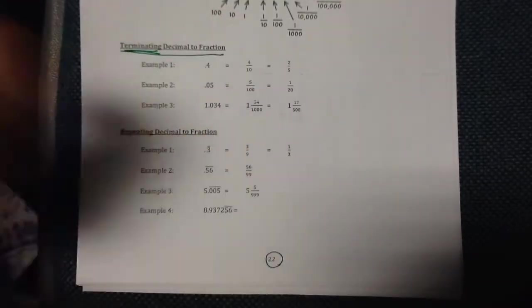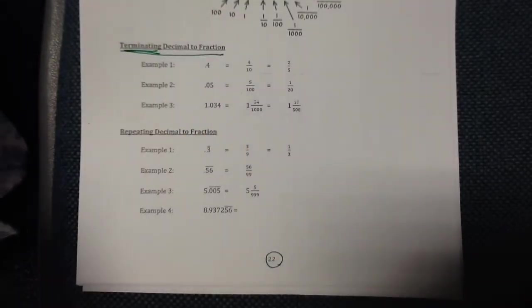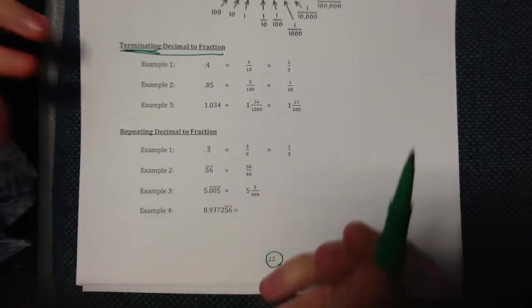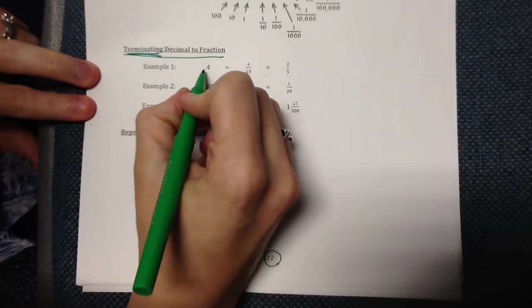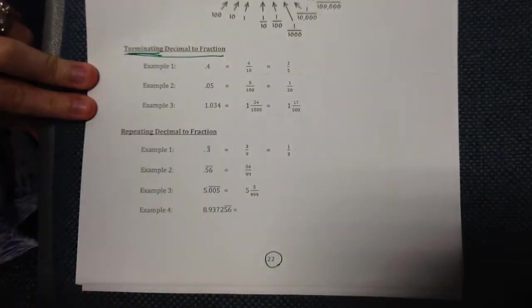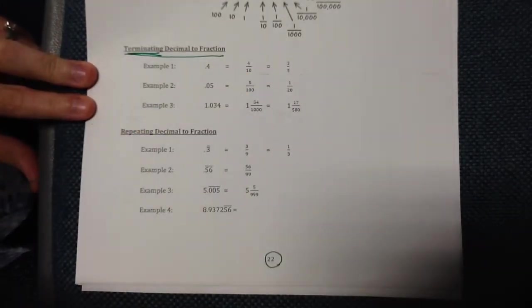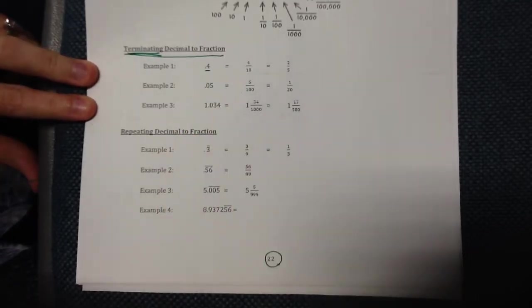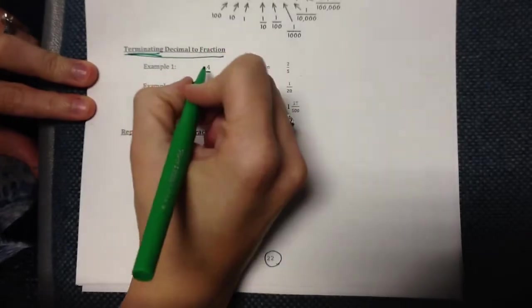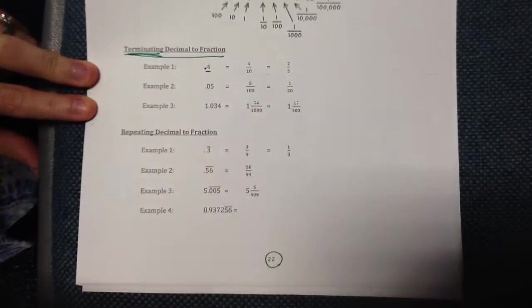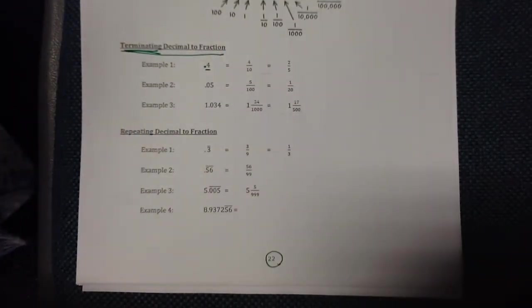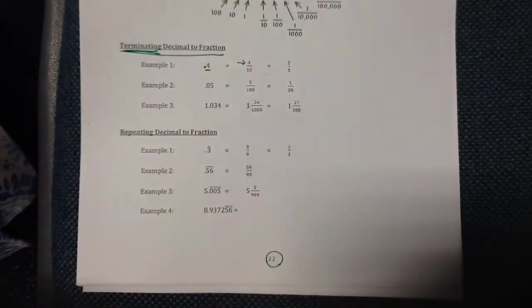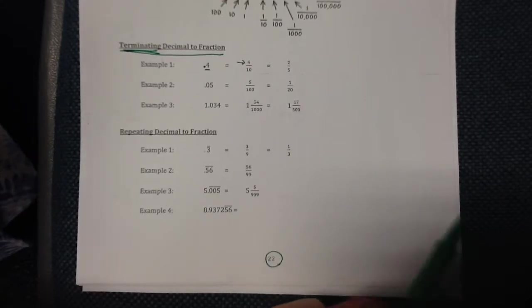The first type is a terminating decimal. Terminating means it does not go on forever and it does not repeat. Here's an example: the first one we have is 0.4. The way that you turn a decimal into a fraction is you count how many numbers are after the decimal place. In this case there is one number after the decimal place, so we put this number on top of our fraction.